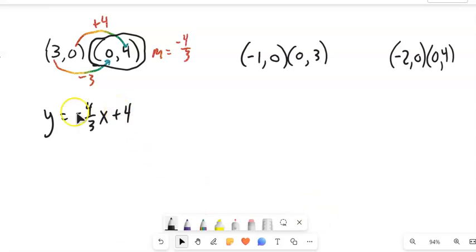I'm going to get to general form, sorry, standard form. So I want x and y on the same side and then I don't want any fractions. So I'm going to add 4 thirds x to both sides.